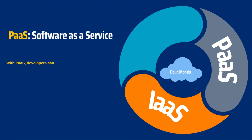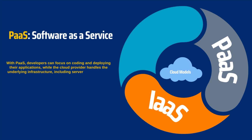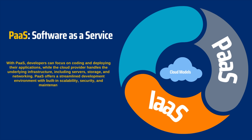The second model is Platform as a Service, or PaaS. It is like going to an ice cream shop and picking your favorite flavor from a range of ready-made options. PaaS provides a platform for developers to build, deploy, and manage applications without worrying about the underlying infrastructure — storage, virtual machines, or networks. It's great for focusing on coding and innovation.